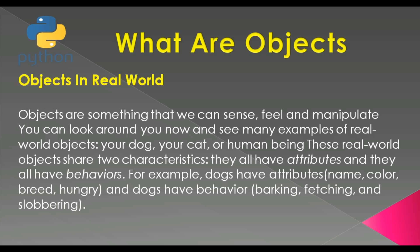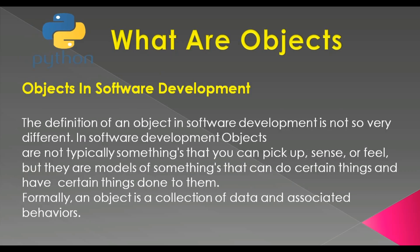Dogs also have behaviors like barking. For example, if we consider a person, for the attributes we can say that a person has a name and skin color. For the behavior we can say that a person can walk, can talk, or can eat.